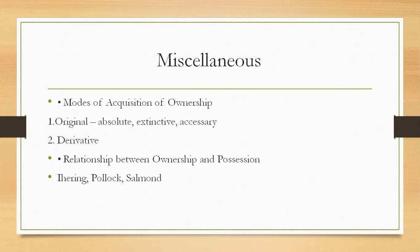Then there could be extinctive acquisition of ownership — when a person by some act extinguishes the ownership of the previous owner, for example by adverse possession. Then there is accessio or accessory acquisition, where ownership of a property is acquired by way of accession to some existing property, such as lands, animals, or fruits of trees. Then it could be derivative in nature — when ownership is derived from a previous owner, it is called derivative acquisition of property. There are many ways, for example succession, transfer of property, sale of goods, and so on.